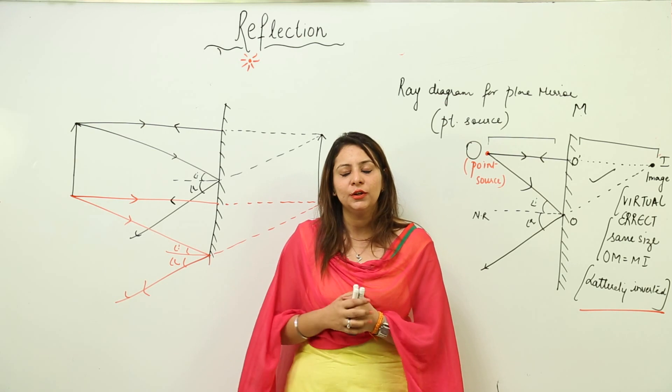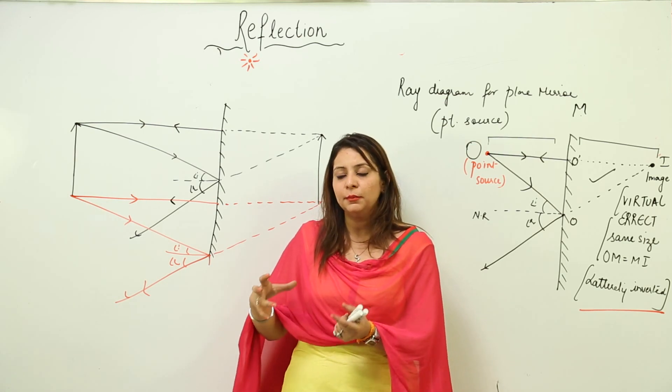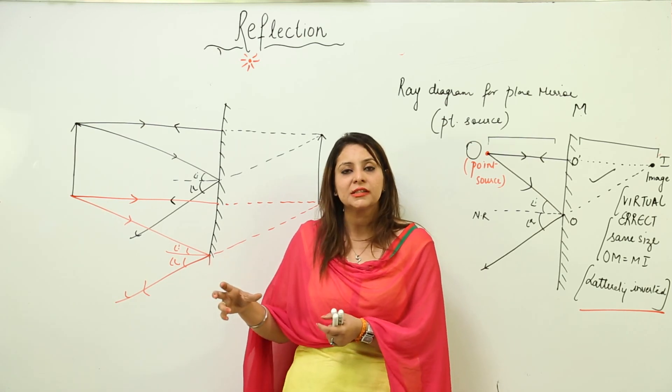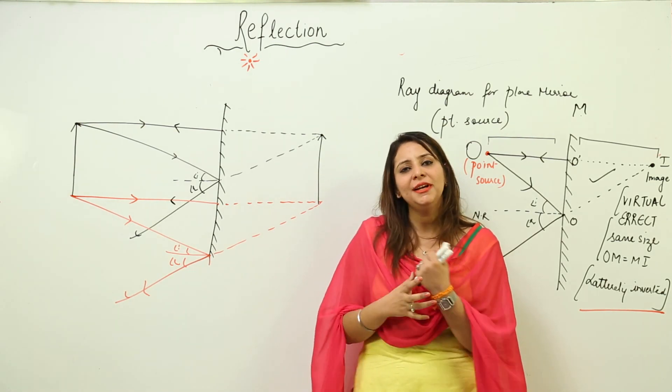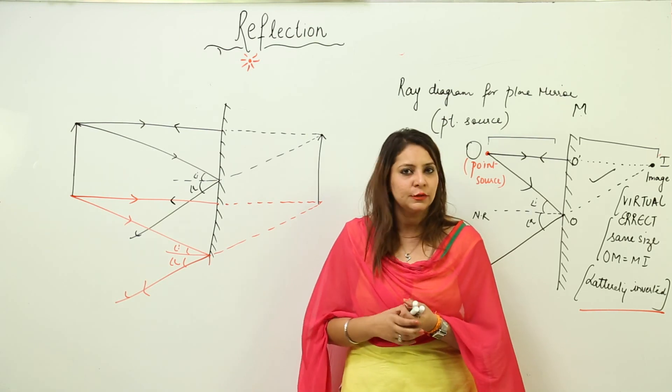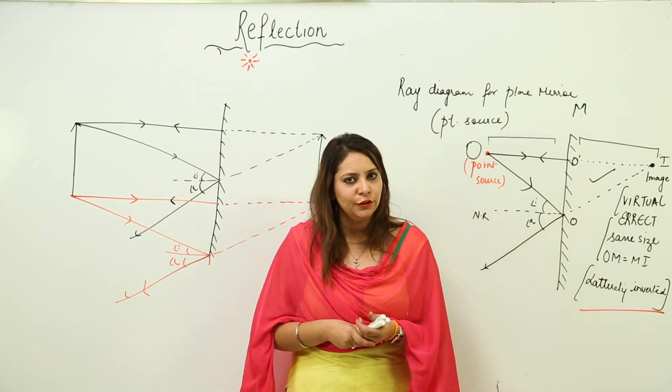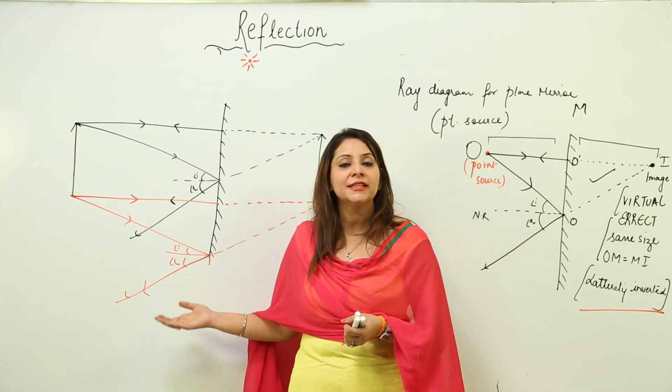It's serving many purposes at many places. This is all about plane mirrors: how we draw the image, how we denote it, and what are the characteristics. By doing this, we finish off with this chapter.